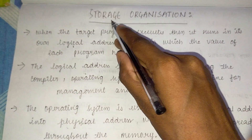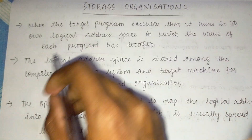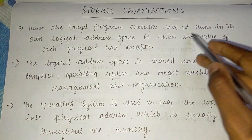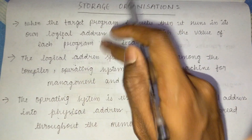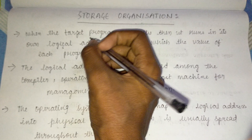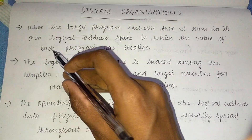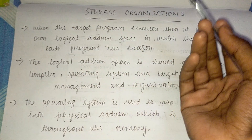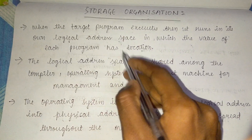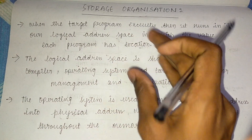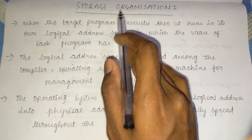Let's see what storage organization is — this is Unit 4 in JNTU. When the target program executes, it runs in its own logical address space, in which the value of each program has a location. So every value in that program will have a storage location.